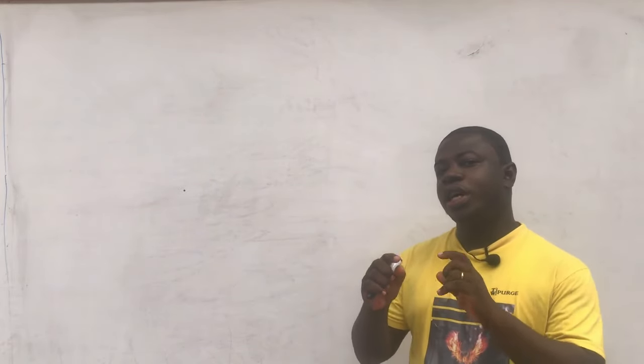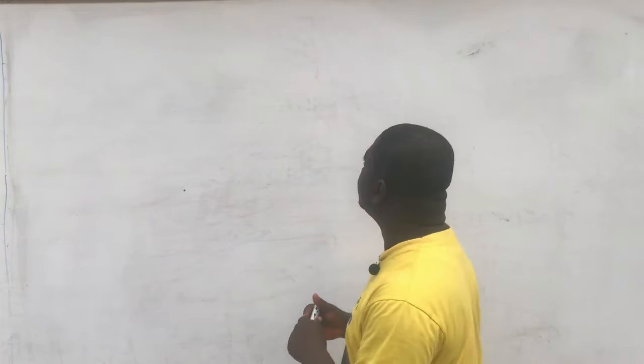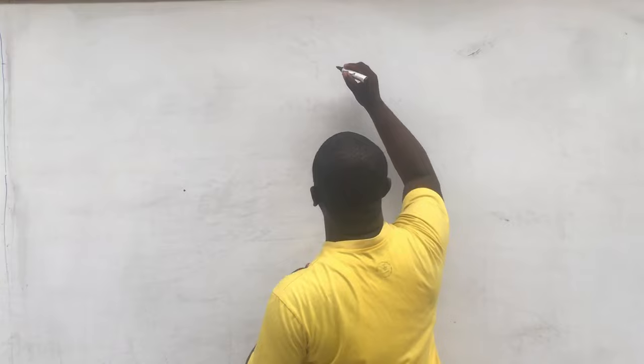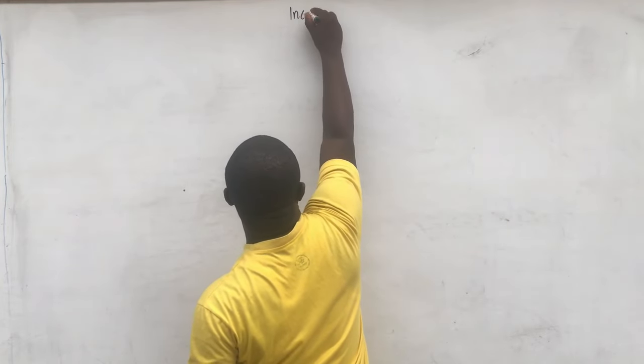Good day. Welcome to another session of Fogg Accountancy Tutorials. Today we are going to continue our lesson on single entry and incomplete records by looking at incomplete records and missing figures. We are going to look at situations where some figures are missing and you are required to find those figures.